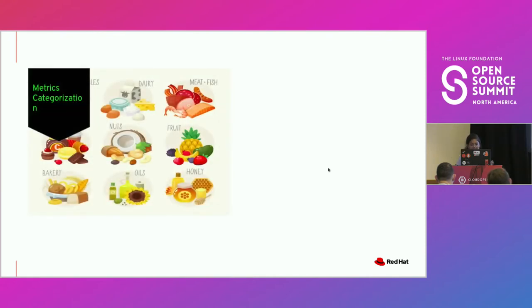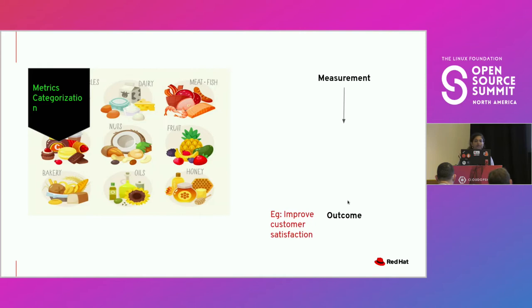One way to think about what those right metrics are is categorizing them. Similar to the food analogy — just like how you have all types of food to choose from, like dairy products, vegetable products, and so on — you should also think about your metrics and group them according to different categories. One way to start is to think about the outcome: what is it exactly that you want to achieve? For example, improving customer satisfaction. If you have a service or product, one goal might be to gauge the customer satisfaction of that product — that is your outcome.